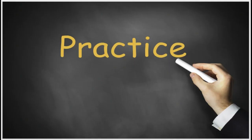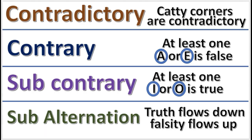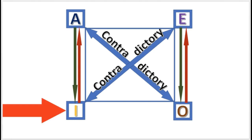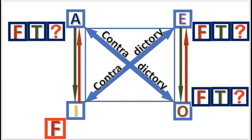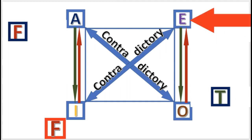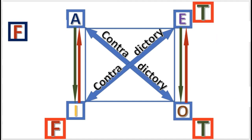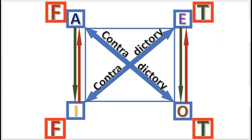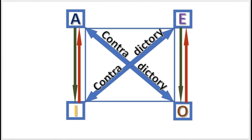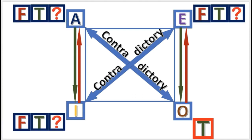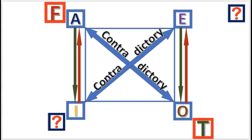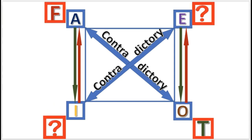Time to work some practice problems involving all four relations. Practice problem one: If I is false, what are the other truth values? E is true, O is true, and A is false. Next practice problem: If O is true, what are the other truth values? A is false, and E and I are undetermined.